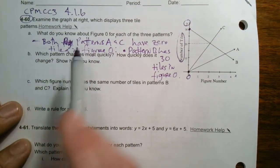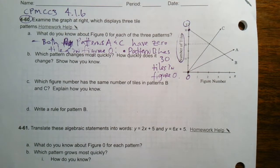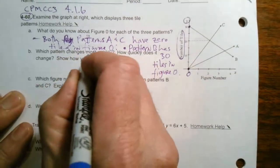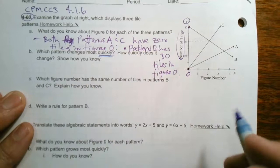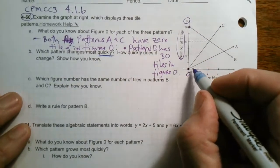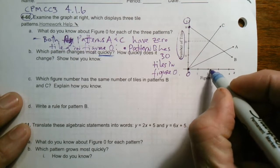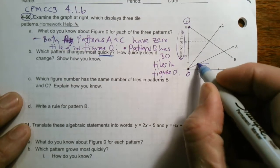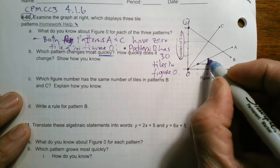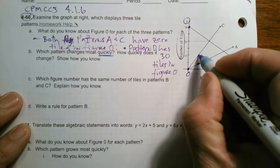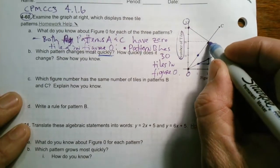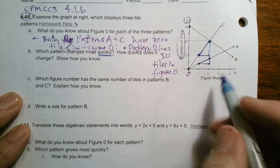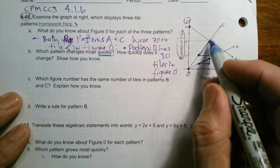So part B says, which pattern changes most quickly and how quickly does it change? So the pattern changing quickly is determined by the steepness of the line. So if I look at pattern A, from figure to figure, it's slope triangle. When we think about a slope triangle, there's where it's at at figure one, here's where it's at at figure two. So its slope triangle is not as steep as if I look at pattern C. Pattern C's slope triangle is steeper. So pattern C is changing quicker than A.